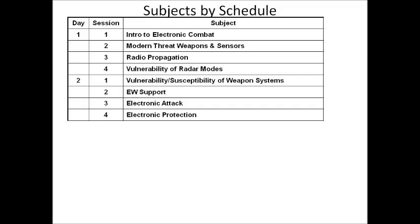Then we talk about the vulnerability of radar modes — vulnerability to jamming and other countermeasures. Then we talk about the vulnerability and susceptibility of weapon systems. The weapon systems, of course, are missiles, guns, and so on that are supported by advanced sensors such as radars, and we talk about their vulnerabilities and the ways we can overcome them using what we gain from electronic warfare.